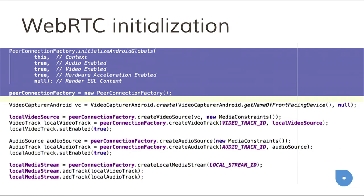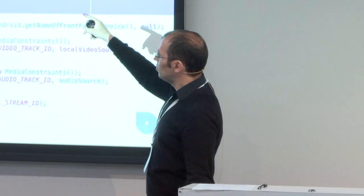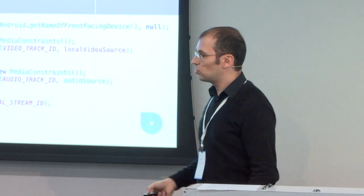We can start with the WebRTC initialization. WebRTC is C++ code, so you need to access all the APIs through Java. There is an initial static method where you pass the context to access all the hardware APIs, and you decide whether to use audio and video and whether to use hardware acceleration. This is needed for the C++ layer to access the Java APIs. With this, you create the peer connection factory, which is the object used to create the peer connection.